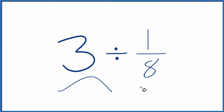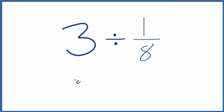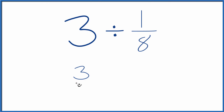Let's divide 3 by 1/8. First off, let's call this 3 over 1. It's still 3 — we're just dividing by 1, but having a fraction is going to make this easier.